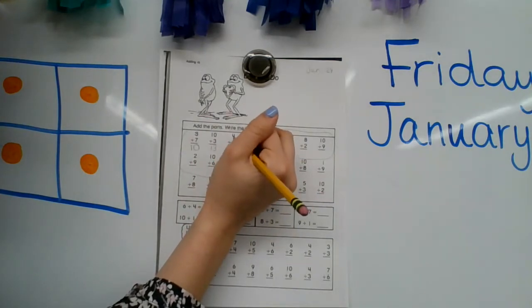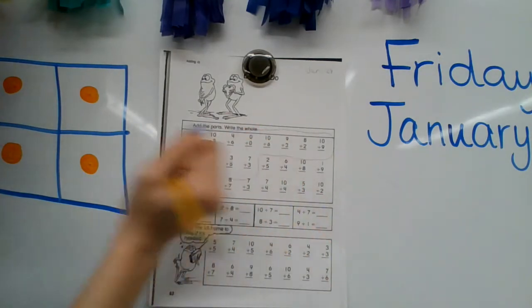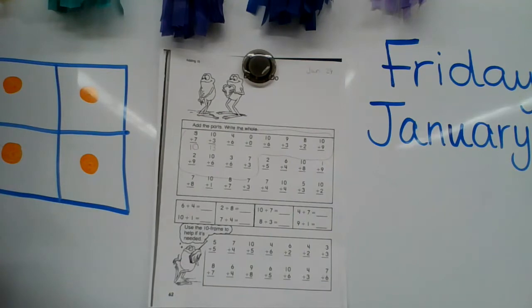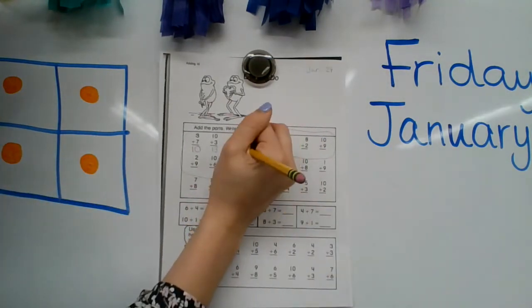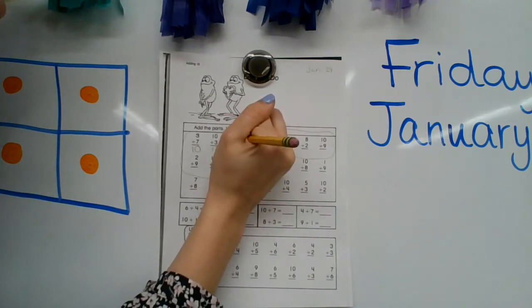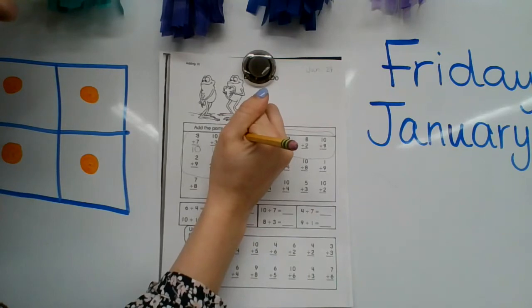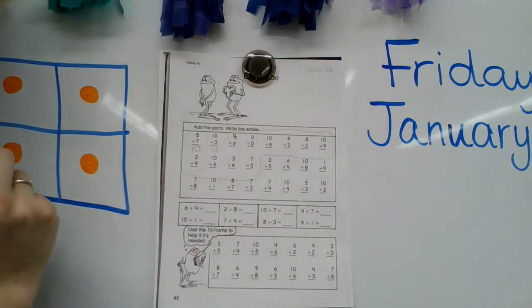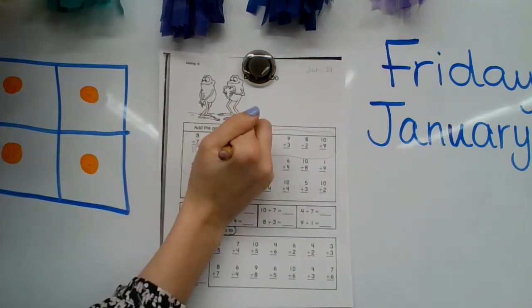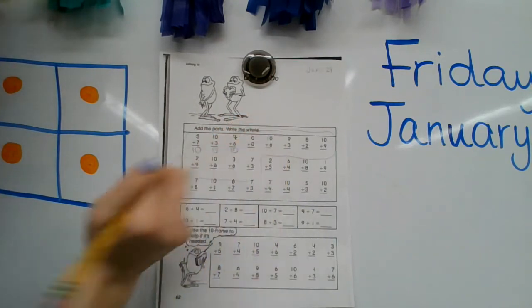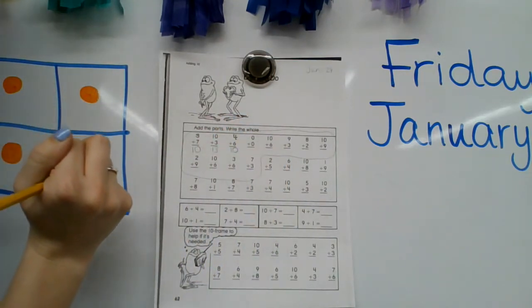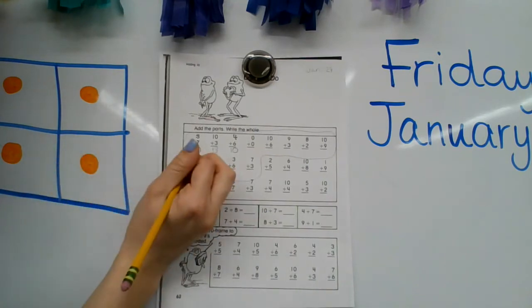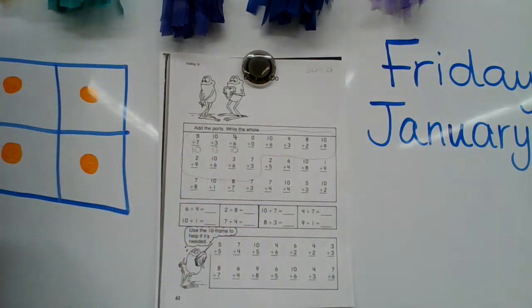Our next one is four plus six. What strategy should we use? Let's do touch points. I'm going to start with the big number six. Six, seven, eight, nine, 10. There we go. Our answer is 10. So we have 10, 13, 10. We'll see if it's a pattern.